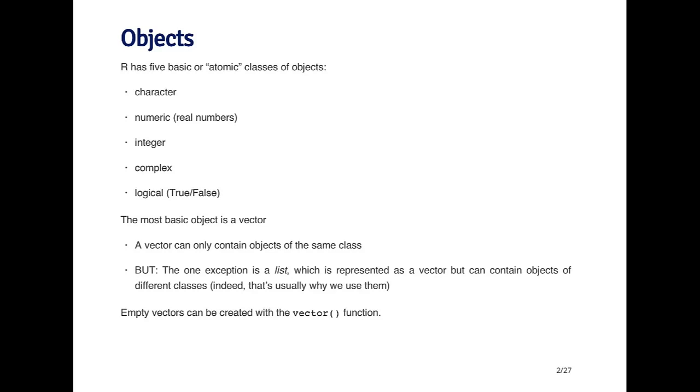This one is no exception. With vectors, there's one type of vector that can have multiple different types of classes, and that's called a list. A list is represented as a vector - it's a sequence of objects - but each element of that vector can be an object of a different class.